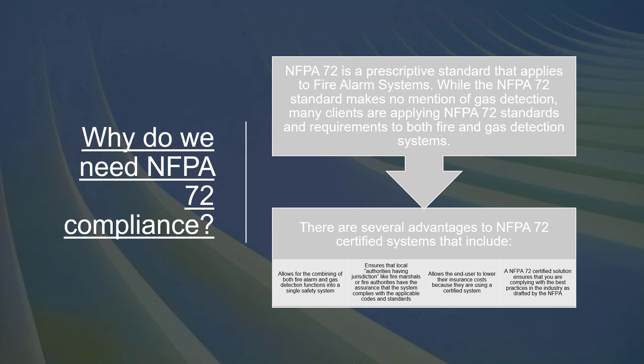NFPA 72 is a prescriptive standard that applies to fire alarm systems. Many clients are applying NFPA 72 standards and requirements to both fire and gas detection systems. Advantages include: it allows combining fire alarm and gas detection functions into a single safety system; it ensures local authorities having jurisdiction, like fire marshals, have assurance the system complies with applicable codes; it allows end users to lower insurance costs; and it ensures compliance with best practices in the industry as drafted by the NFPA.